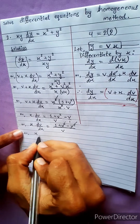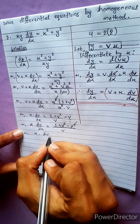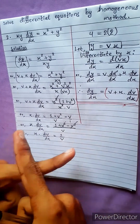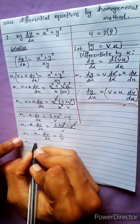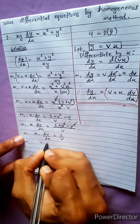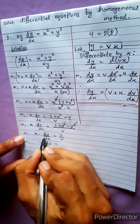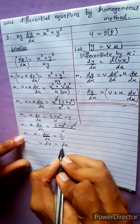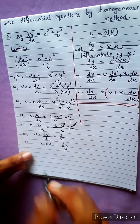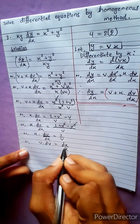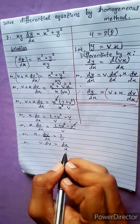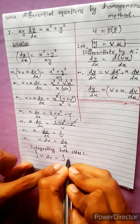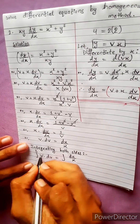x dv by dx equals to 1 by v. We will cross multiply: v dv divided by dx equals to 1 by v. Cross multiply by x: v dv equals to dx by x.